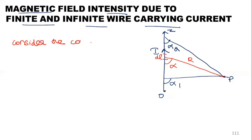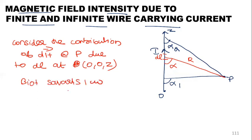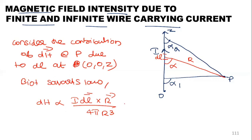This derivation normally comes for 8 or 10 marks. We consider the contribution of dH — the differential magnetic field intensity at P due to dl. The conductor is along the z-axis so only the z-coordinate applies; x and y are zero. According to Biot-Savart's law, we write: dH = i·dl × r̂ / (4π r³). That is equation number one.